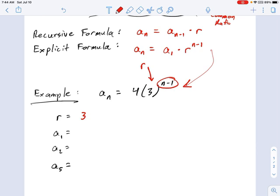And a_1, look at this, a_1 is whatever is multiplied by that thing called r to the n minus 1. Whatever's in front of the parentheses. So that's a_1.